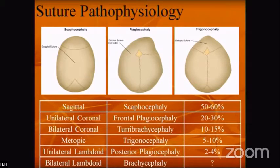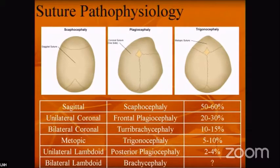In sagittal synostosis the cranium has a boat-shaped appearance. In anterior plagiocephaly, the right-sided anterior coronal suture is obliterated, so development and brain shift occur to the opposite side. In trigonocephaly, the metopic suture is closed, producing a keel-shaped structure.